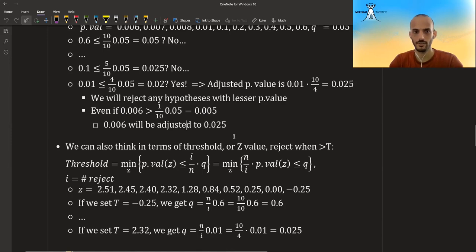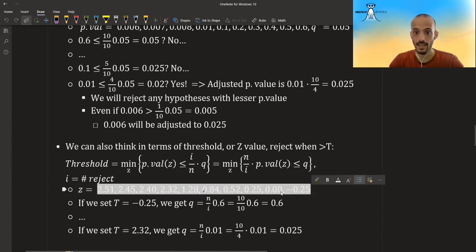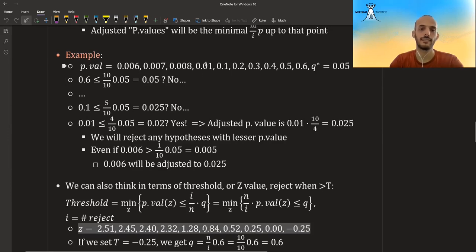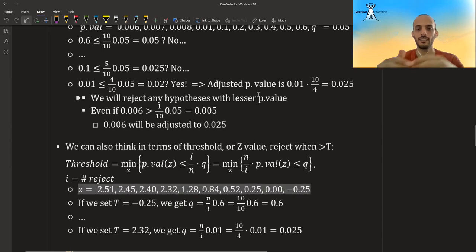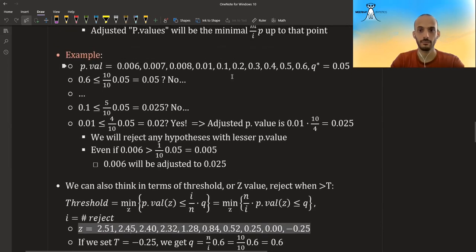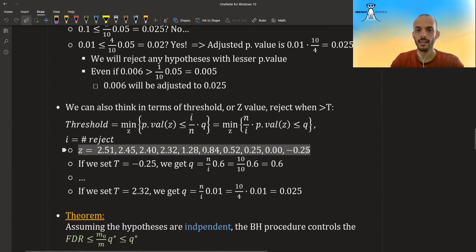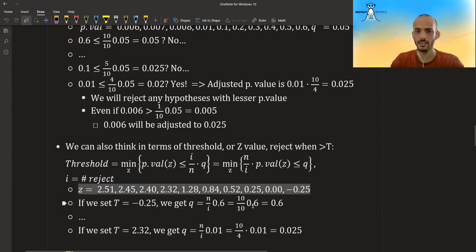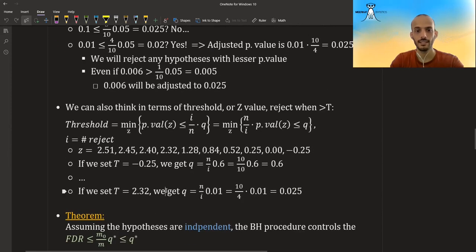We can also think of this in terms of a threshold. So here we are thinking it in terms of P values, but these P values, suppose they came from normal distribution, one-sided test. Then these are their corresponding Z values. So instead of asking what is the index that everything up to that we reject, we can also ask what is the threshold that anything above it we reject. So I took these P values, these are their corresponding Z values, and now if I take this threshold, then I get Q is equal to 0.6. So it's, of course, not less than 0.05. But once I get to 2.32, which is the corresponding one to 0.01 here, then I get that Q is equal to, so I get that the Q here is 0.025. And this is the threshold. This is our threshold. Anything above this threshold, we reject and everything below this threshold, we don't reject.